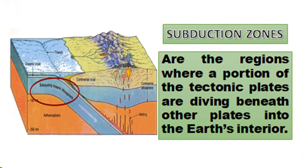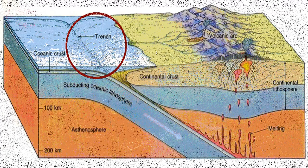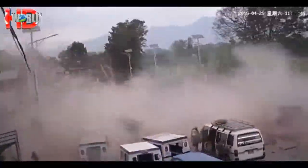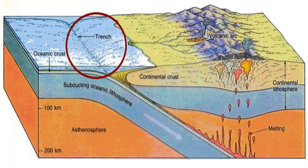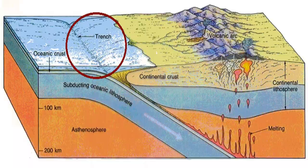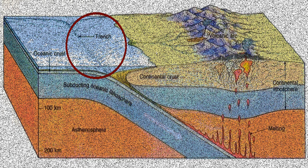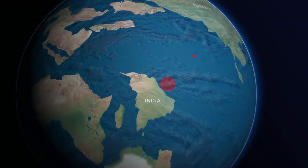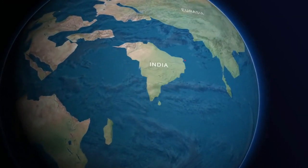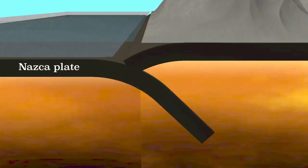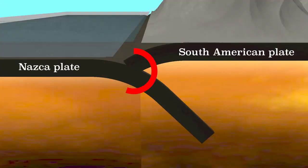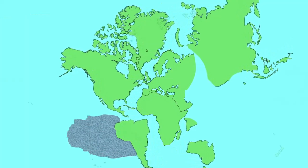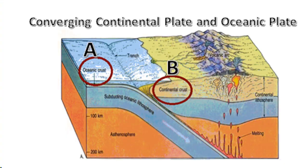Subduction zones are regions where portions of tectonic plates are diving beneath other plates into Earth's interior. These zones are defined by deep oceanic trenches, large earthquakes that extend from the trenches landward, and lines of volcanoes parallel to the trenches. General examples of convergent boundaries include the boundary between the Eurasian Plate and the Indian Plate at the Himalayas, and the boundary between the Nazca Plate and the South American Plate along the West Coast of South America. There are three types of convergent boundaries.